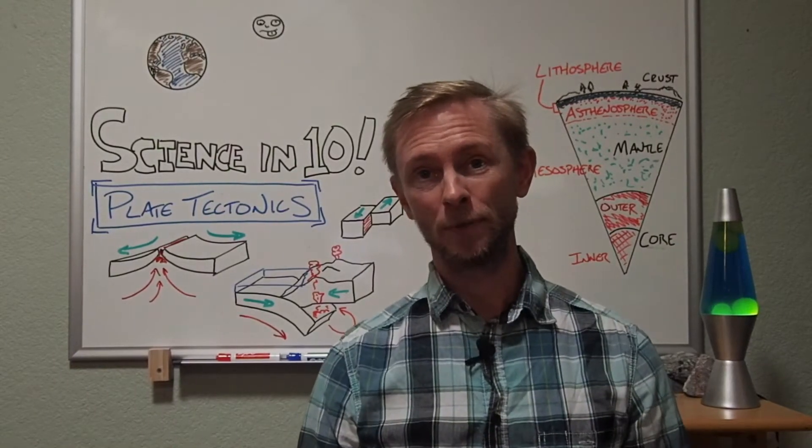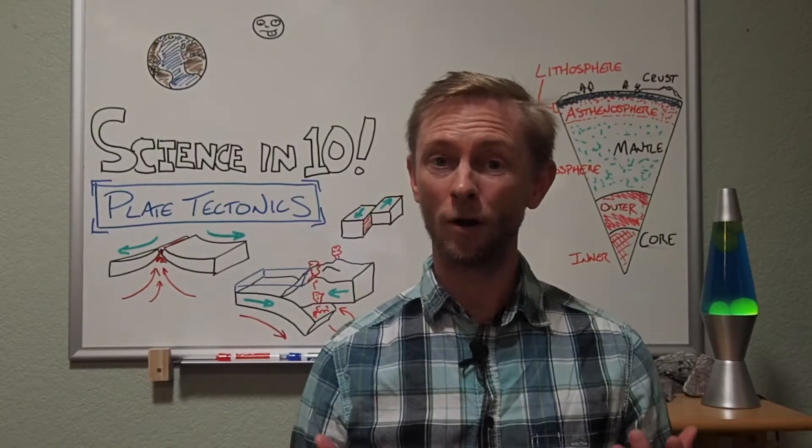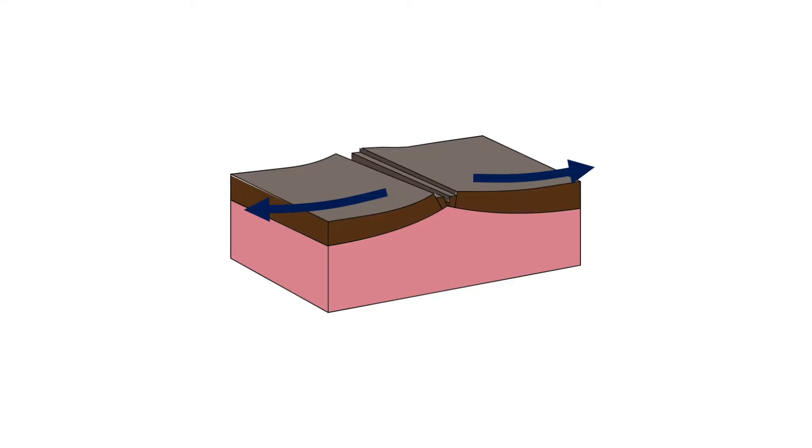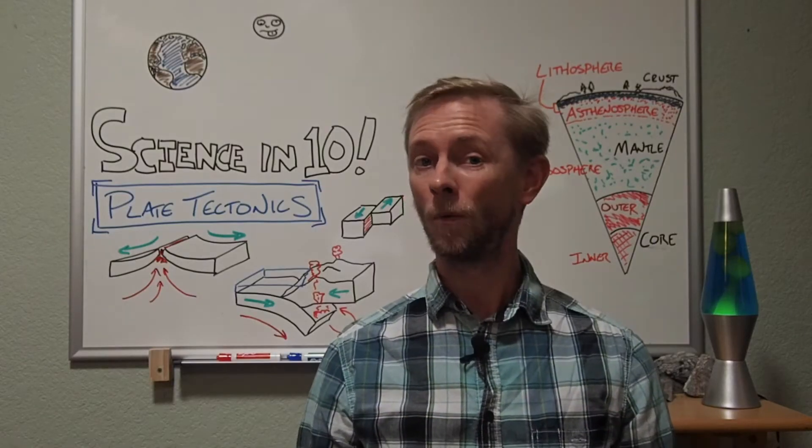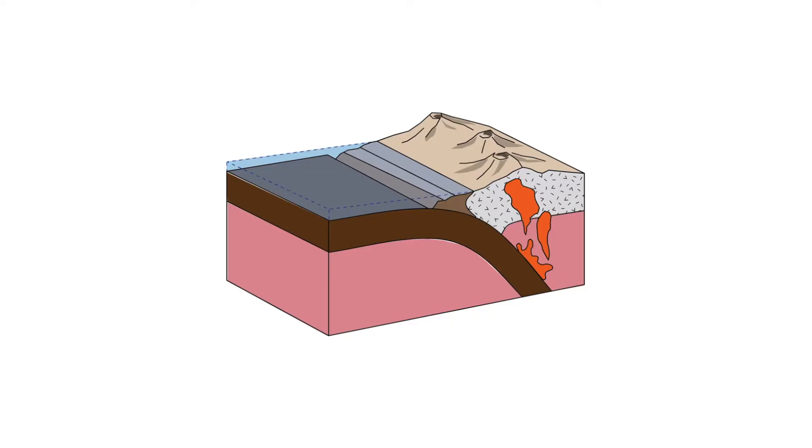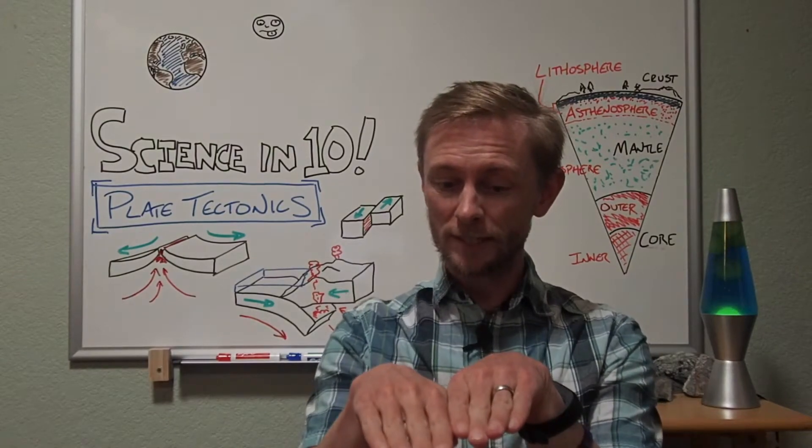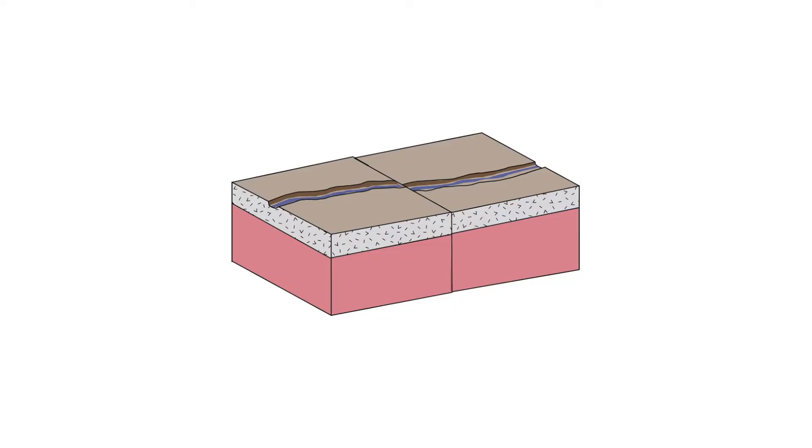At the boundaries between separate plates, the plates on either side are moving relative to each other. Plates can move away from each other, creating space for molten material from the upper mantle to rise up and form new crust. Or plates can move towards each other in a process of collision, building volcanic and continental mountain ranges. And thirdly, plates can slide laterally or horizontally past each other.